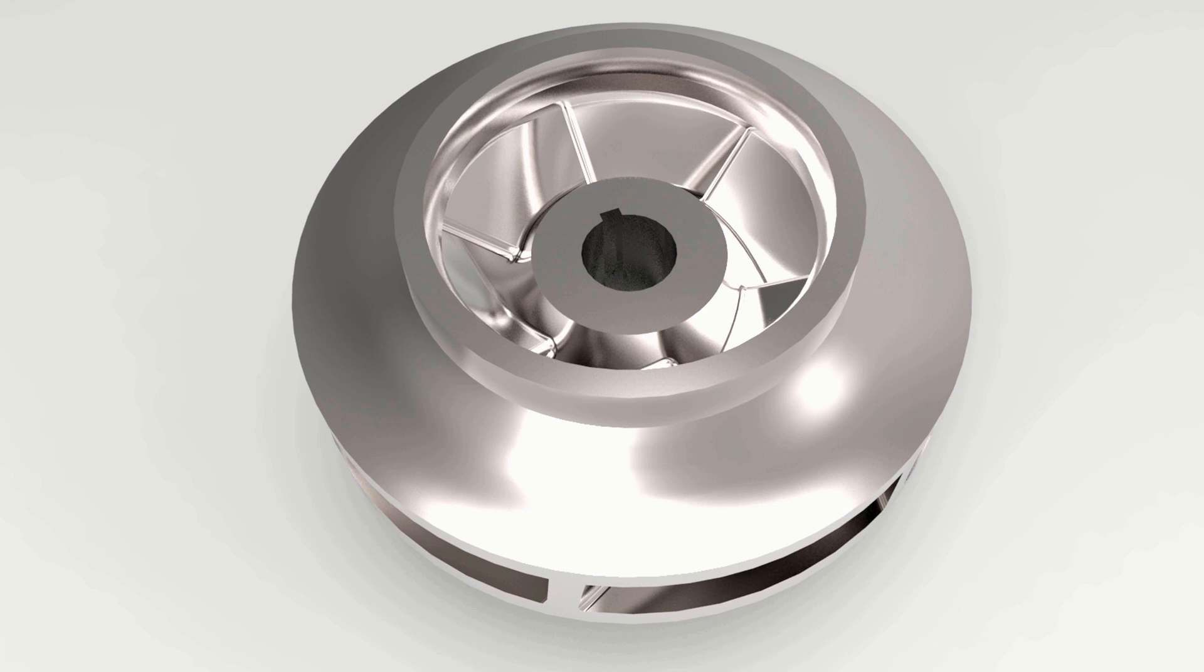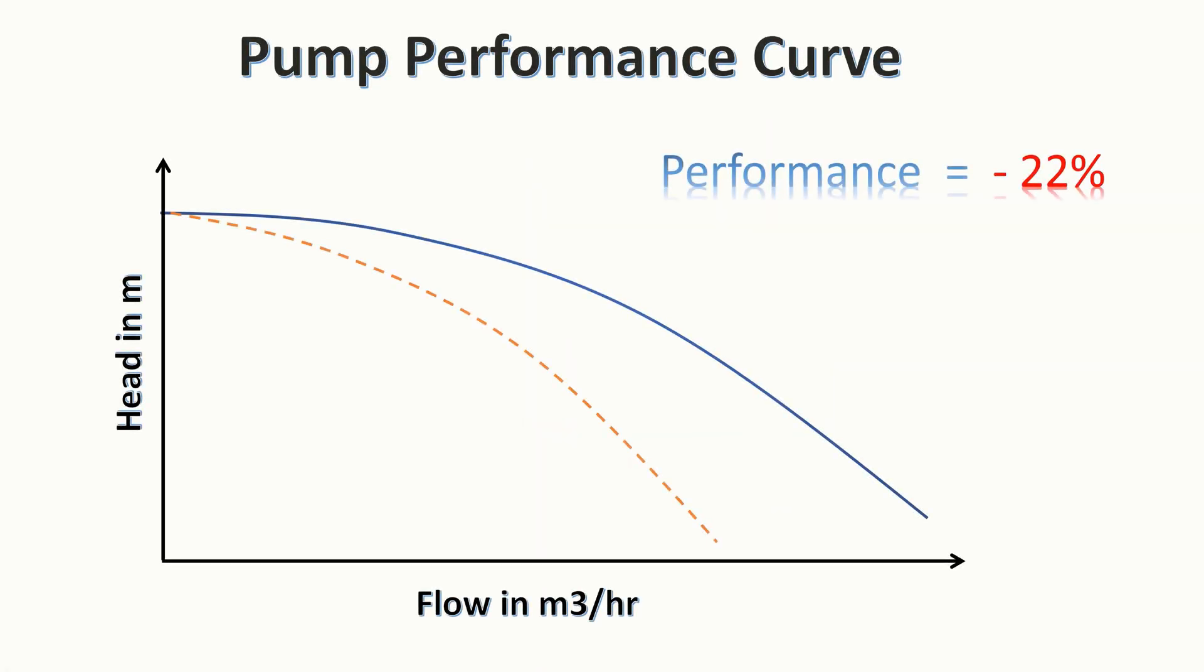For example, a centrifugal closed impeller pump can have up to 22% drop in performance with just 2% of air present in the liquid.